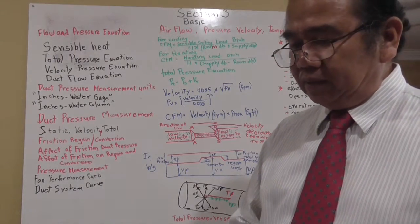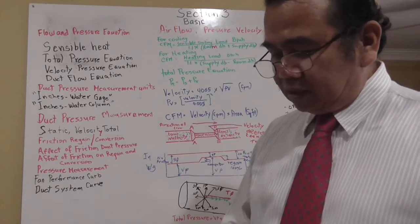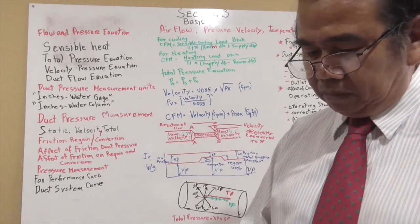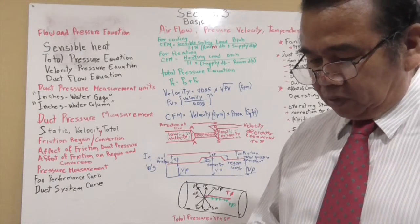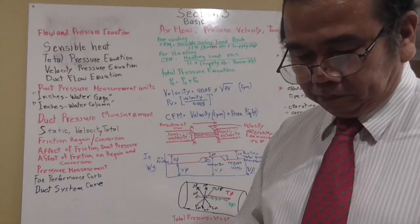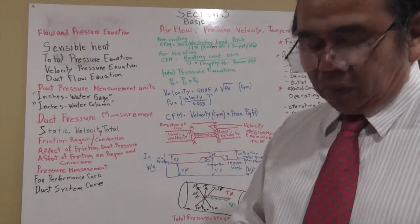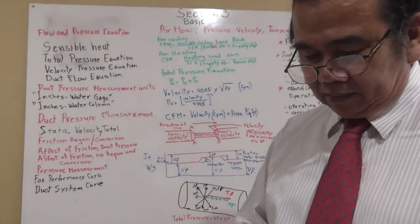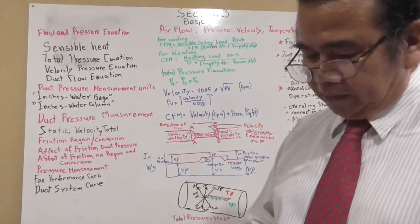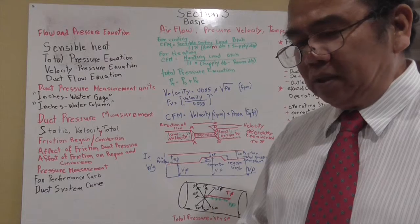Operating point for non-standard air: fan curve and duct system curve must both be adjusted for the influence of non-standard air. This can be accomplished by using altitude and temperature correction factors to adjust fan pressure flow and duct pressure flow. When operating temperature in fan and duct are equal, the non-standard air operating point CFM will be approximately equal to the standard air operating point.